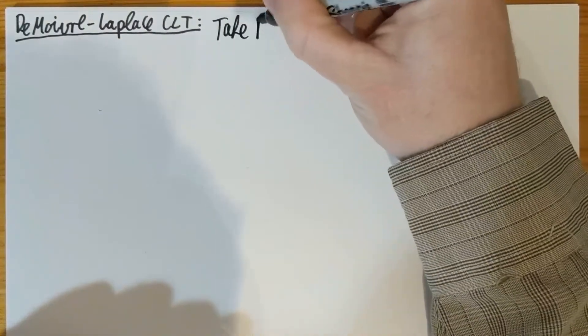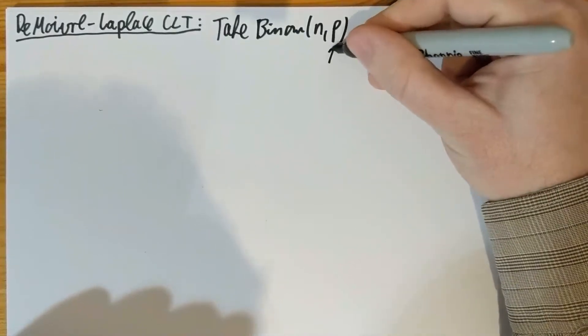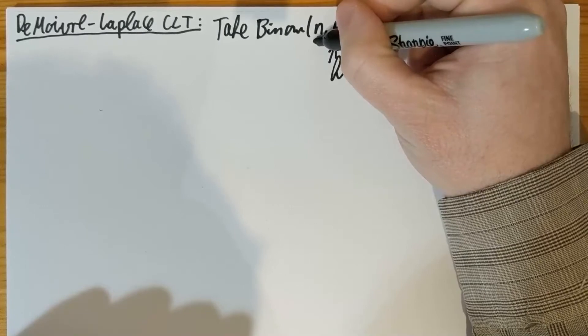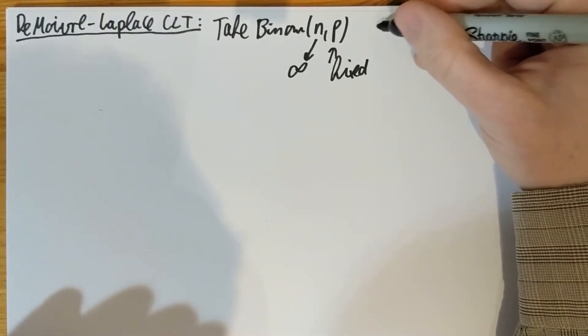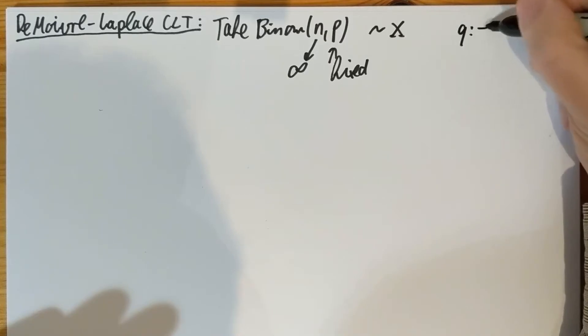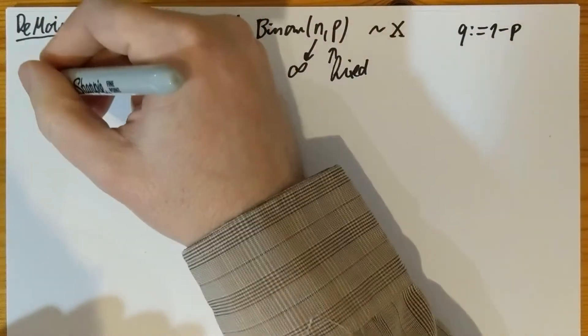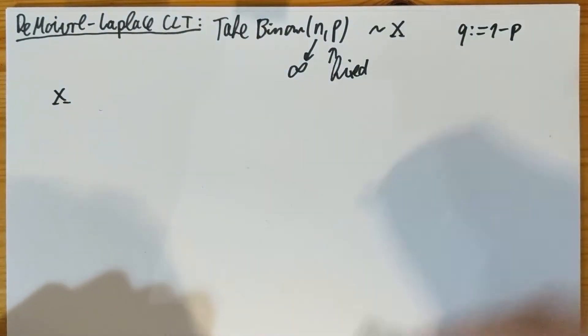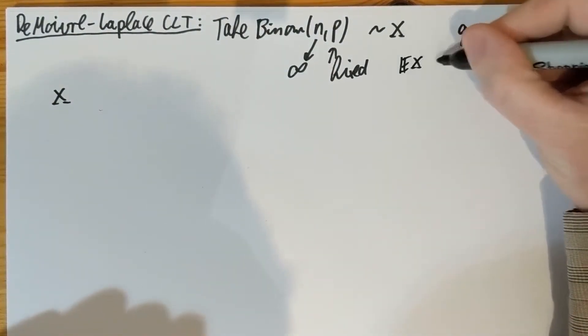Take a binomial random variable with parameters n and p. p will be fixed and n will go to infinity. Notice that p is fixed — it's not going to zero — so we are not in the Poisson approximation regime; we are in the central limit theorem regime. I'll call this random variable X, so X has a Binomial(n, p) distribution. Also, q is as always 1 minus p.